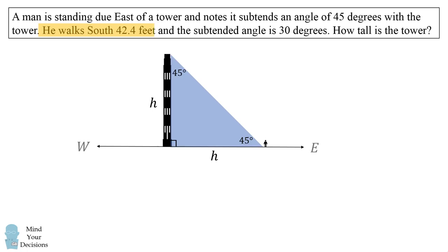Now the man walks south 42.4 feet. So we'll visualize this. The man is walking south. This will be at a right angle. So we end up with another right triangle.